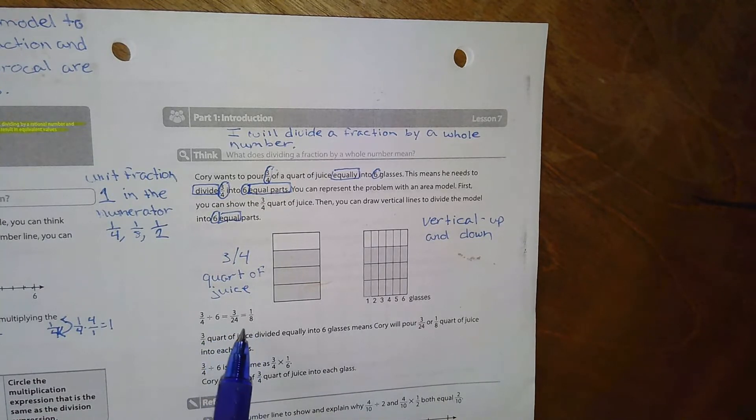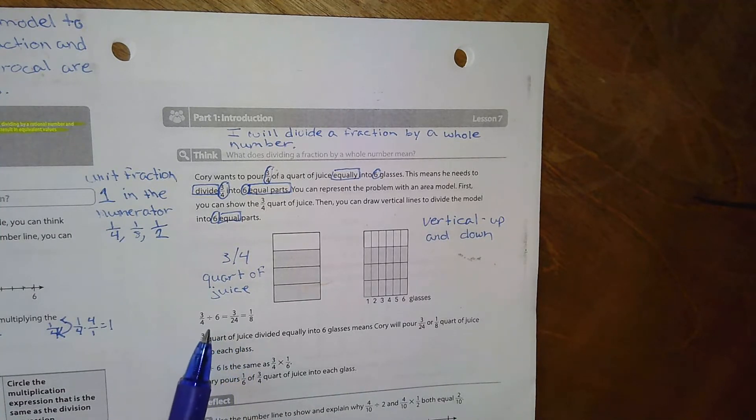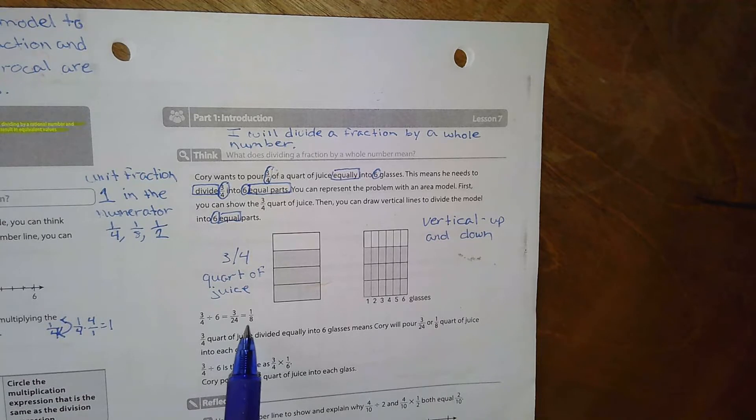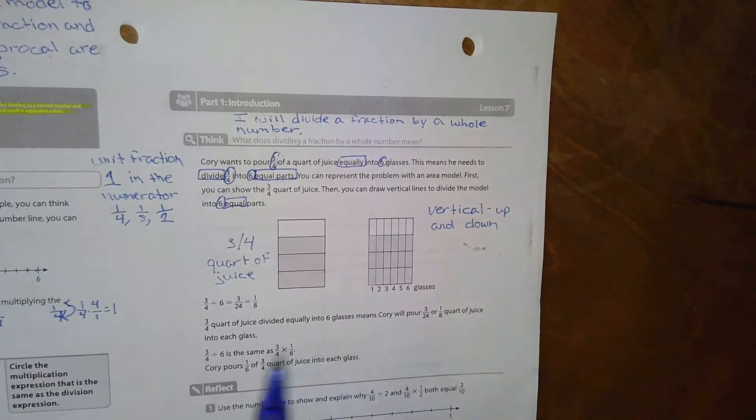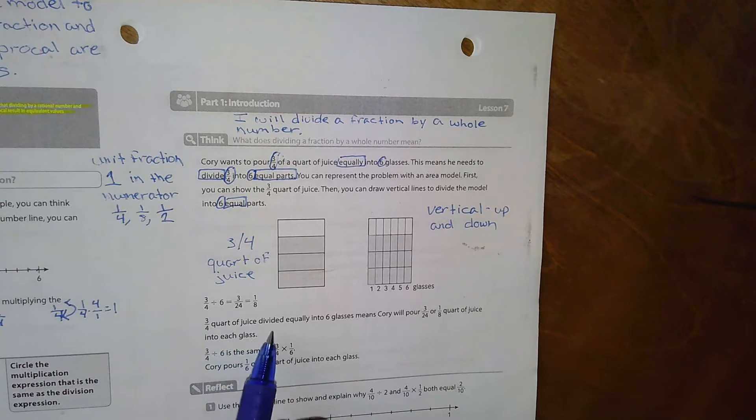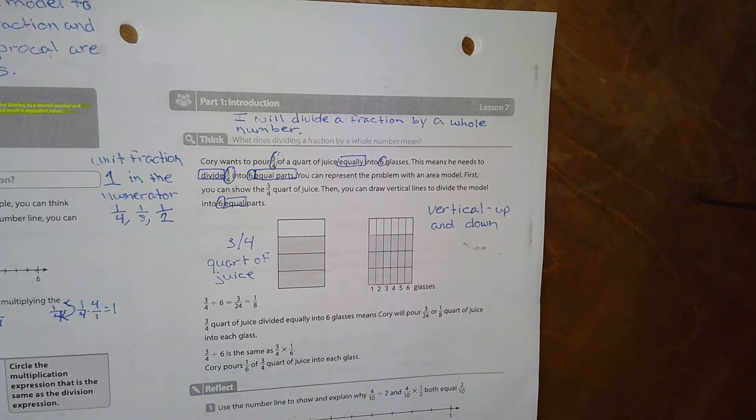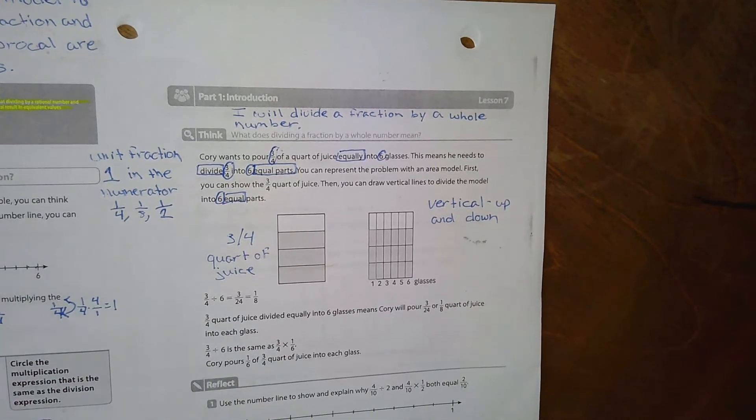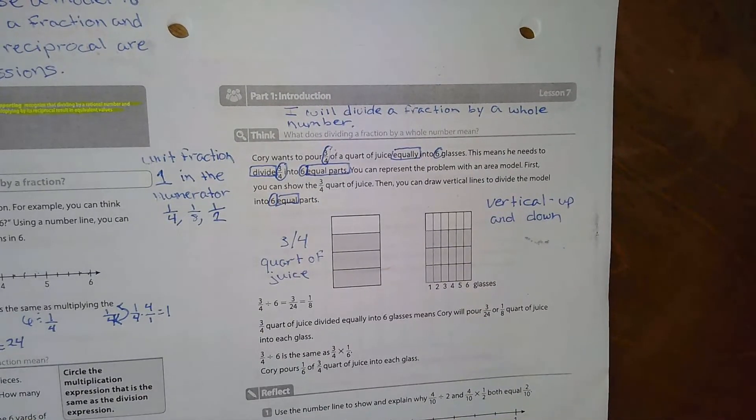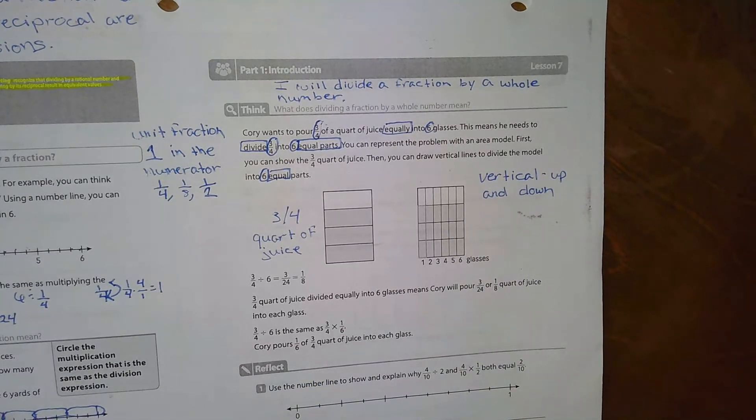Okay, so again we have our division. And three-fourths divided by six equals three-twenty-fourths equals one-eighth. Three-fourths quart of juice divided equally into six glasses means Cory will pour three-twenty-fourths or one-eighth quart of juice into each glass. Cory pours one-sixth of three-fourths quart of juice into each glass.